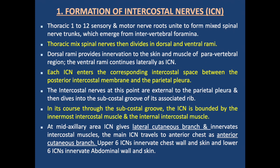Regarding the relevant anatomy and formation of the intercostal nerves: thoracic T1–T12 sensory and motor nerve roots arise from the spinal cord. They unite to form a mixed spinal nerve trunk emerging from the intervertebral foramina. The thoracic mixed spinal nerve then divides into dorsal and ventral rami. Dorsal rami innervate the skin and muscles of the paravertebral region, while the ventral thoracic rami continue laterally as intercostal nerves.